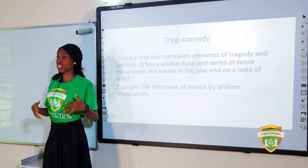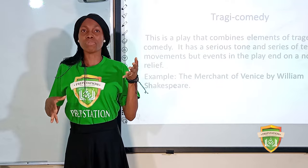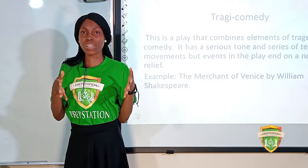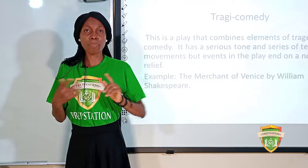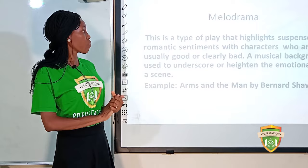Tragicomedy is a play that combines the elements of tragedy and comedy. It begins as a serious event and then ends happily. The tone and series of movements are usually serious, but it ends happily. A popular example is The Merchant of Venice by William Shakespeare.